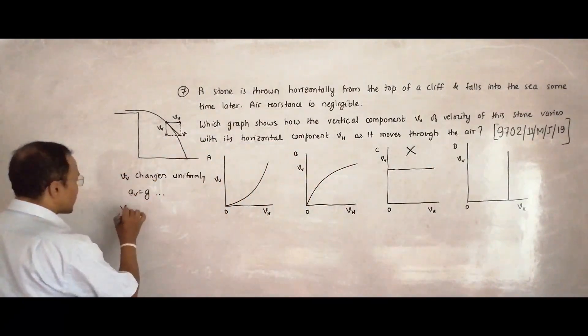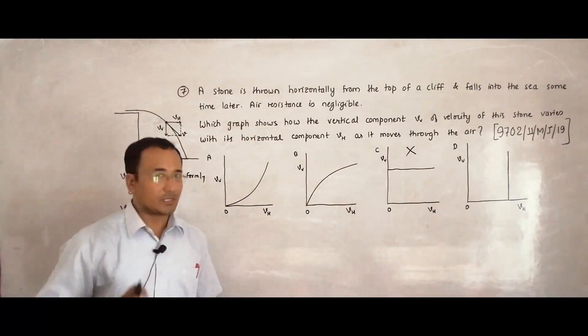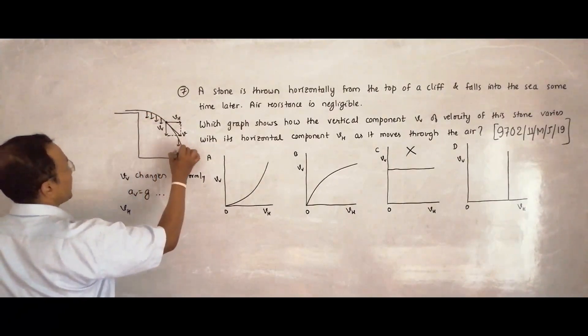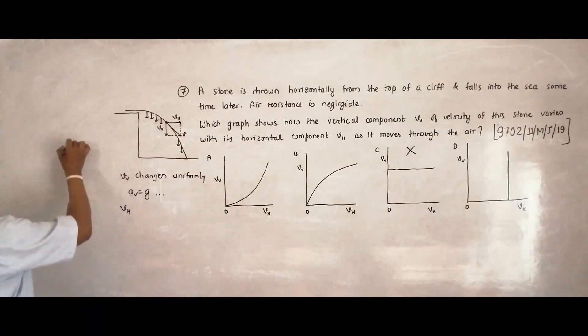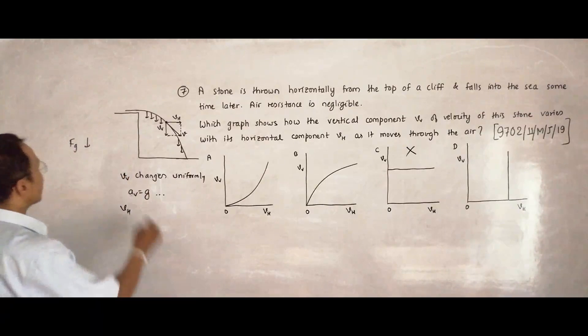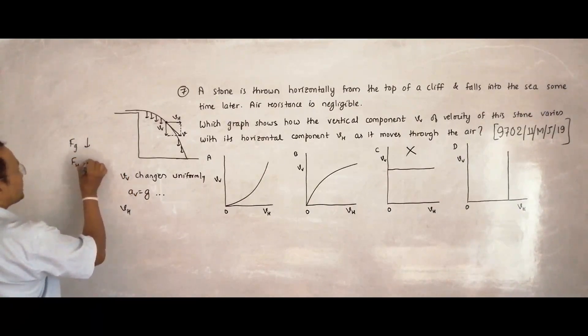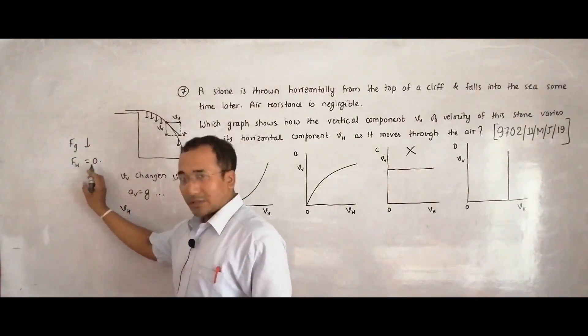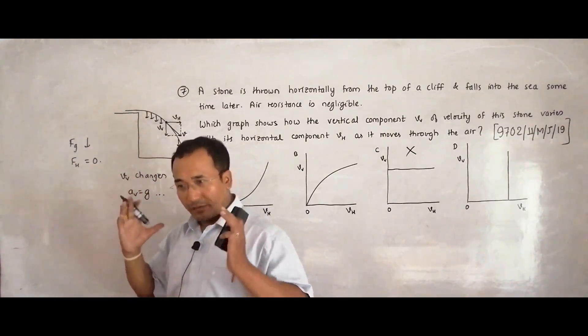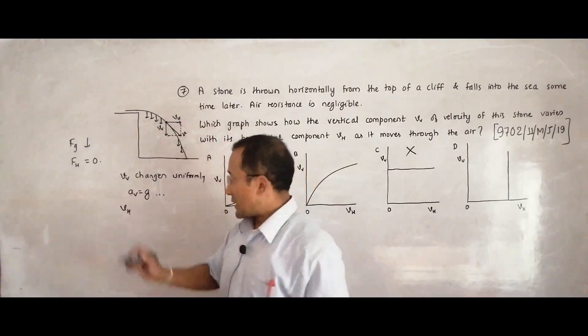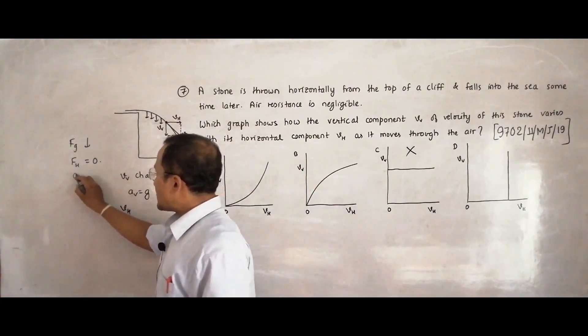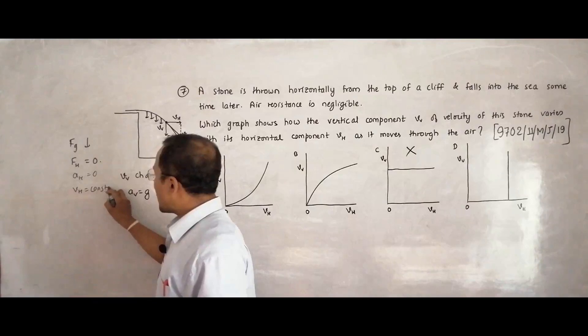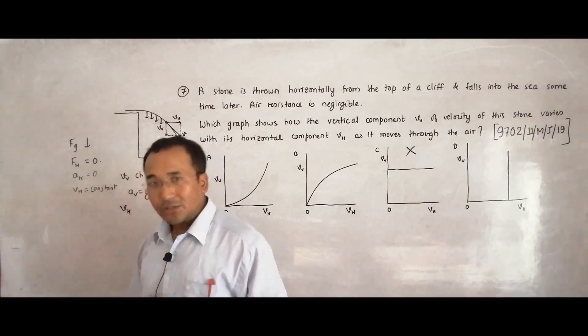Then what about V horizontal? So this V horizontal remains constant. Because in a projectile, the only force is the force of gravity. And the force of gravity will be acting vertically. So if it acts vertically, then there is no component in the horizontal direction. If the force is vertical, it will have no components in the horizontal direction. Because the angle is 90. So any force, any vector will have no component at an angle of 90 degrees. So that means, the acceleration in the horizontal direction should be equal to 0. And V in this direction should be constant. So horizontal velocity should be constant.